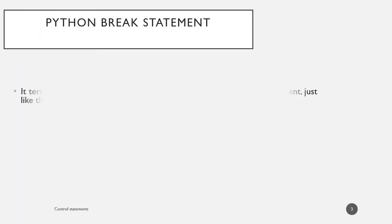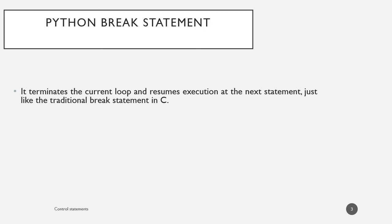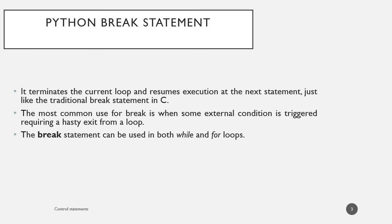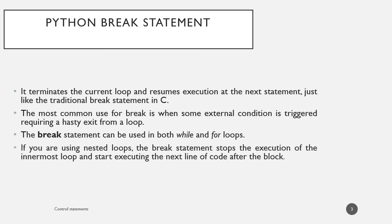Python break statement: it terminates the current loop and resumes execution at the next statement, just like a traditional break statement. The next statement is the statement after the loop. The most common use of break is when some external condition is triggered requiring a hasty exit from a loop. The break statement can be used in both while and for loops. If you are using a nested loop, the break statement stops the execution of the innermost loop and starts executing the next line of code after the block.